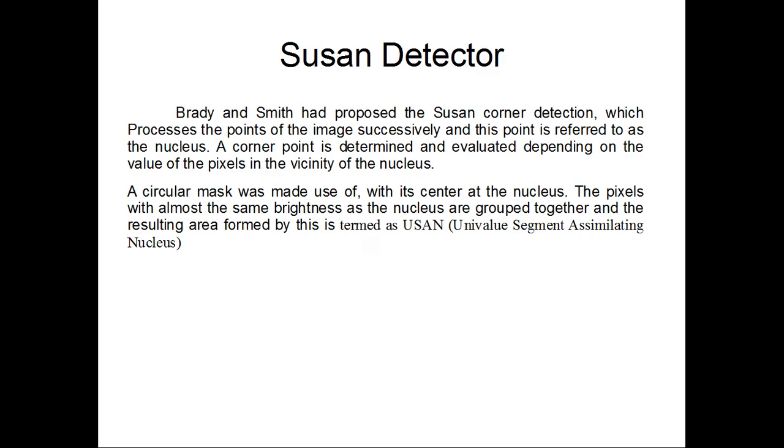Brady and Smith had proposed the Susan corner detection, which processes the points of the images successively and this point is referred to as the nucleus. The corner point is determined and evaluated depending on the value of the pixels in the vicinity of the nucleus. A circular mask was made use of with its center at the nucleus. The pixels with almost the same brightness as the nucleus are grouped together and the resulting area formed by this is termed as USAN, which stands for Univalue Segment Assimilating Nucleus.